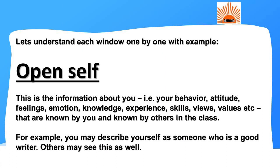Let's understand each window one by one with examples. Let's talk about Open Self. This is the information about you — your behavior, attitude, feelings, emotion, knowledge, experience, skills, views, values, etc. — that are known by you and known by others.